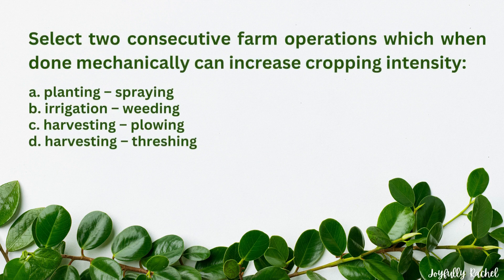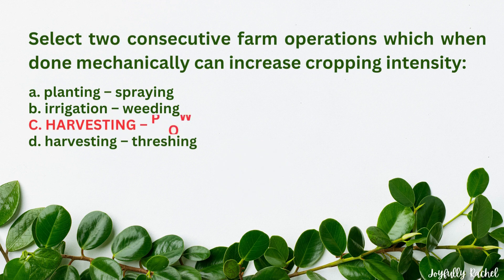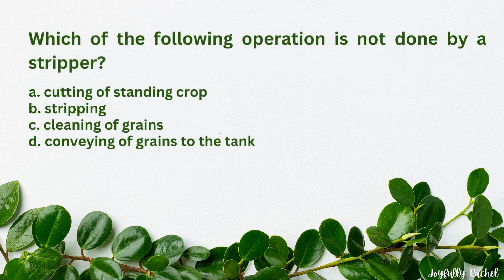Select two consecutive farm operations which when done mechanically can increase cropping intensity: A. Planting, spraying; B. Irrigation, weeding; C. Harvesting, plowing; D. Harvesting, threshing. The answer is C. Harvesting, plowing.